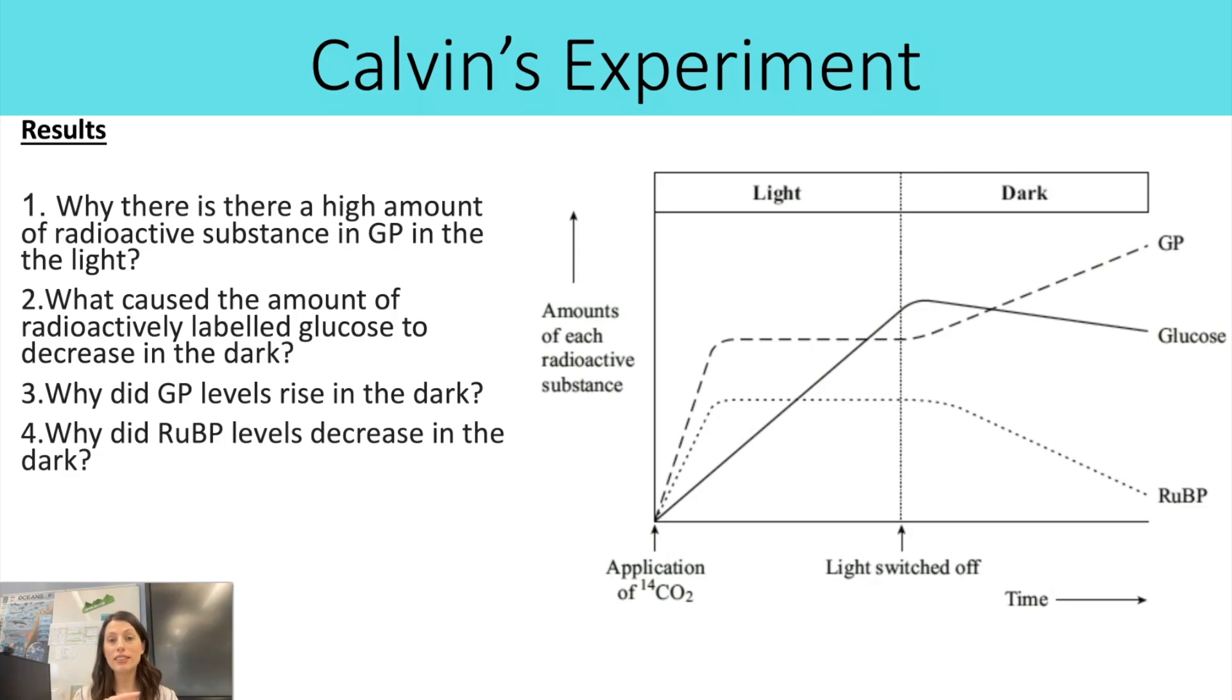So the RUBP is still being used, but it's not being regenerated. Now, ultimately, if this went on for long enough in the dark, then you would find the GP levels would also decrease because if you run out of RUBP, then you won't be able to make GP.